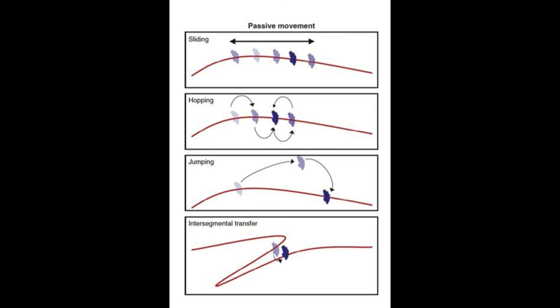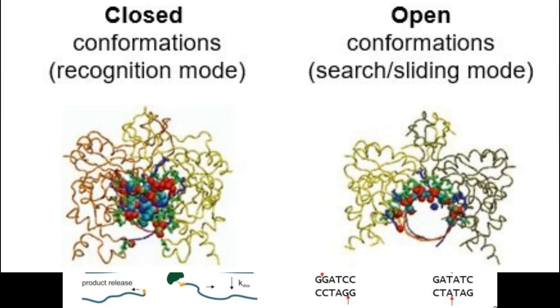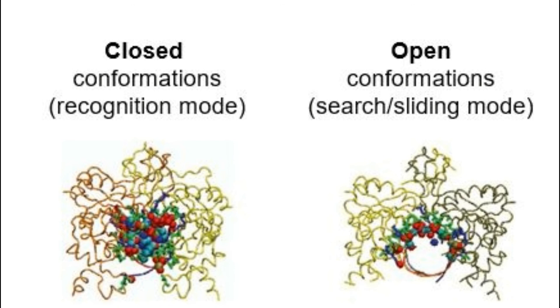An interesting case for studying protein recognition sites is EcoRV — a restriction enzyme from E. coli — which occupies two kinds of conformation: closed or open. If closed, it is trying to find a specific site for high-affinity interaction, and the DNA at that location may be kinked. If open, it is in search or sliding mode with non-specific binding where the DNA remains straight, allowing EcoRV to move across it.